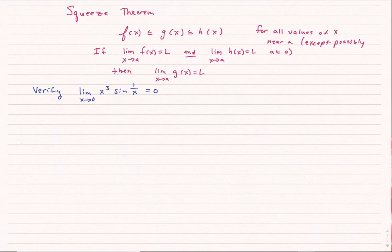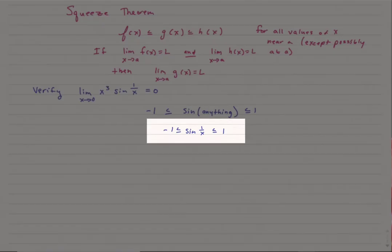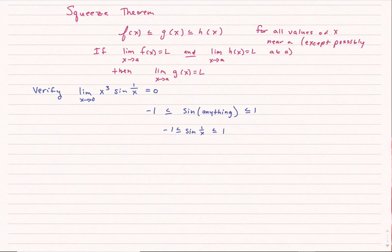Well, what I do know is this. I know that sine of anything is always between negative 1 and positive 1. That's the range of my sine function. So what I have is this. This is all fine, but I don't want this. I want the limit as x approaches 0 of x cubed times sine of 1 over x. Well, all I have to do is multiply all three parts of this inequality by x cubed.